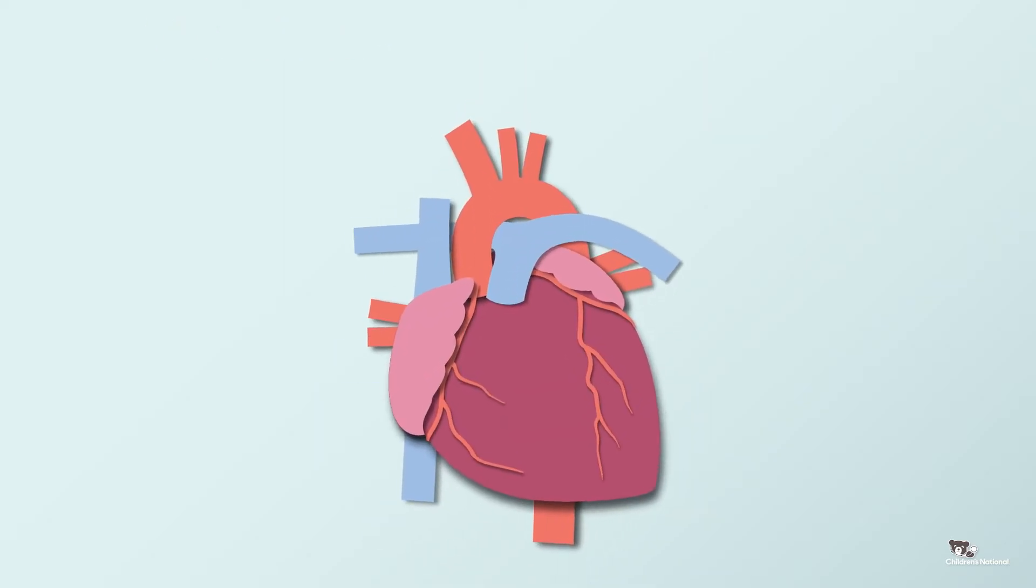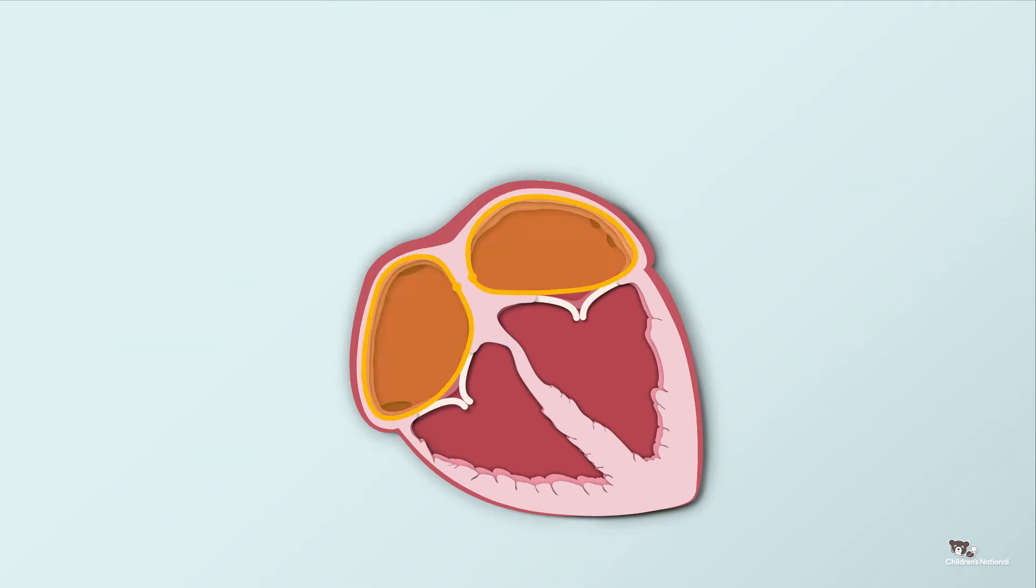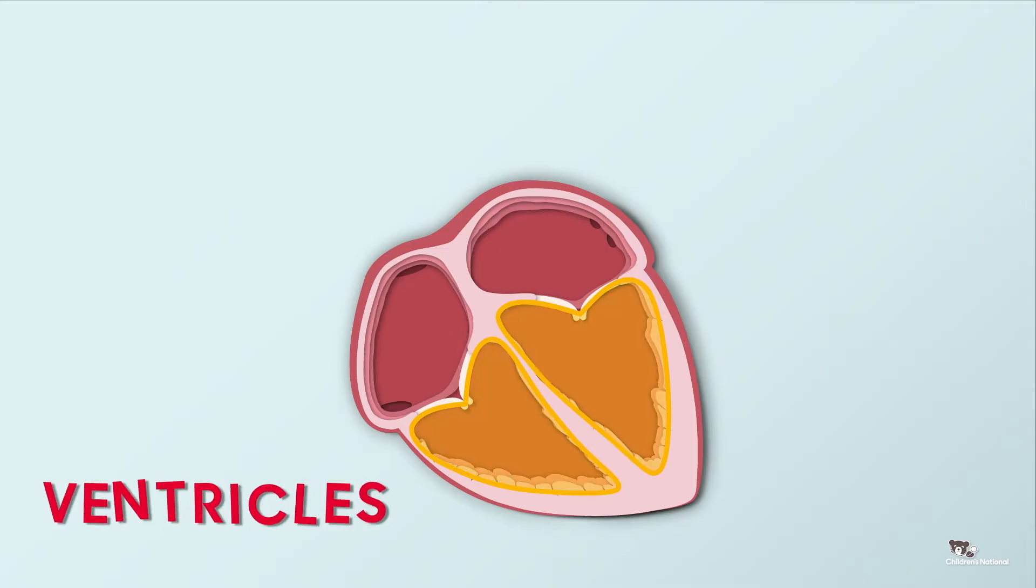It is a muscle about the size of a fist. And inside, it's divided into two parts that collect blood, called atria, and two parts that pump blood, called ventricles.